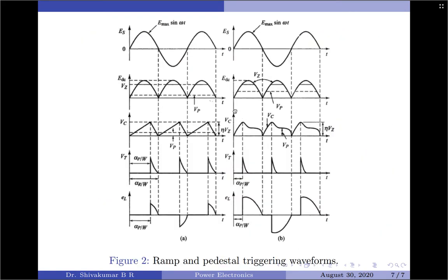The capacitor voltage waveform is very important here. The dashed line represents η·Vz, which is the threshold voltage of the UJT — the UJT will trigger as soon as the capacitor voltage reaches this value. The parameter α represents the exact value of ωt at which the UJT triggers and therefore the thyristor triggers.